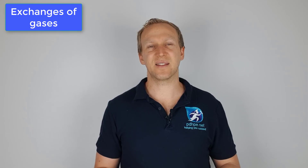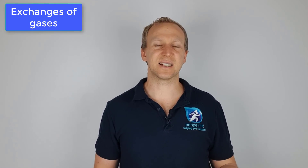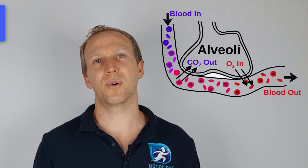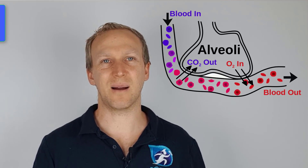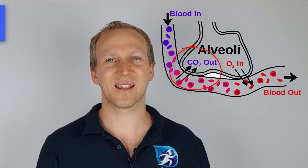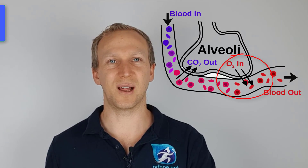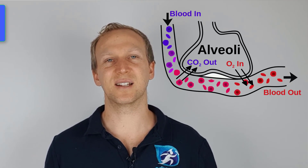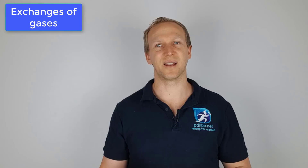Gas exchange occurs both internally and externally. Starting with external exchange: this is the gas exchange that happens at the alveoli. Your alveoli are full of air you've breathed in, and your body brings deoxygenated blood to the alveoli. Carbon dioxide diffuses from your capillaries into the alveoli, while at the same time oxygen diffuses from the alveoli into your blood to be taken away to the body. So the external gas exchange is carbon dioxide going out of your blood into the alveoli and oxygen going into your blood.